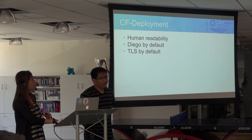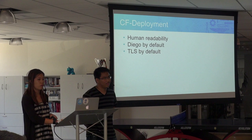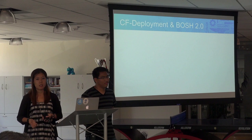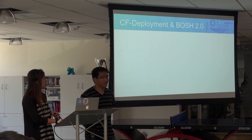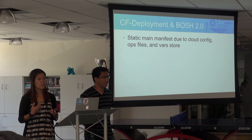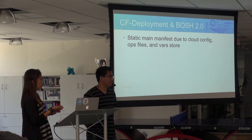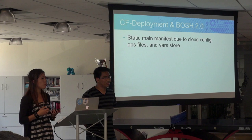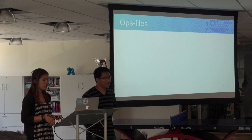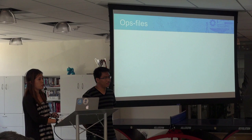Regarding how CF Deployment optimizes for human readability: CF Deployment takes the new features in BOSH 2.0 and uses them to make it easier to understand and operate. CF Deployment has a static main manifest, which is possible due to the Cloud Config and two other BOSH 2.0 features — ops files and VAR stores. An ops file is a separate YAML file that stores specific configuration information you might want to apply to your main manifest.